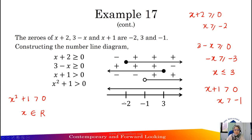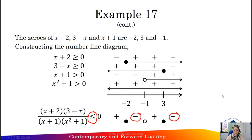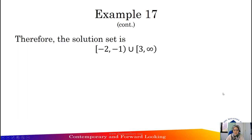For x² + 1 greater than 0: x is all real numbers, from negative infinity to positive infinity. Combining signs for (x + 2)(3 - x) / [(x + 1)(x² + 1)] ≤ 0: negative × positive / (negative × positive) gives positive; positive × positive / (negative × positive) gives negative; positive × positive / (positive × positive) gives positive. We choose the negative sign, so the solution is the closed interval [−2, −1) union the closed interval [3, ∞)... wait — the solution is the closed interval [−2, −1) union {3}. The stated solution is the closed interval negative 2 to negative 1 open, union closed interval 3.